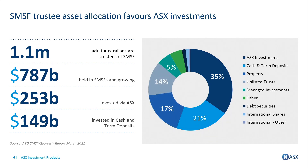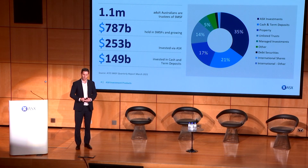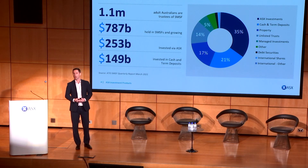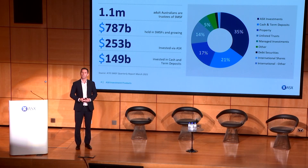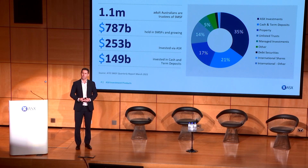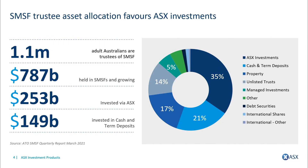One segment of the Australian investor landscape that loves using ASX listed products are self-managed super funds. As many of you will know, there are over one million self-managed super fund trustees in Australia. They hold an incredible amount of assets — over $700 billion sitting inside self-managed super funds. Of that $700 billion, there's over $250 billion actually sitting on the ASX, predominantly in Australian large-cap shares.